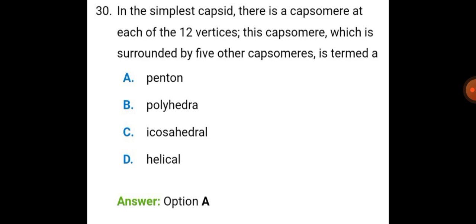In the simplest capsid, there is a capsomer at each of the 12 vertices. This capsomer, which is surrounded by 5 other capsomers, is termed as penton.